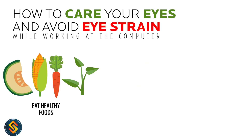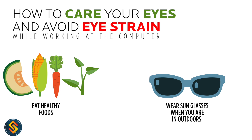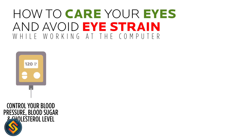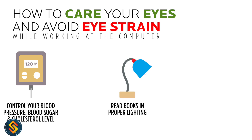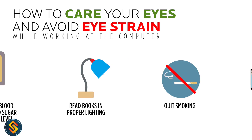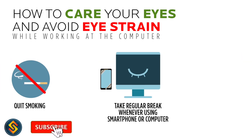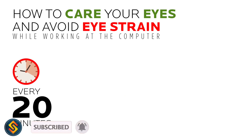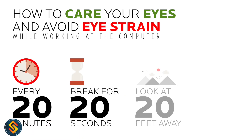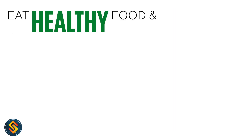Eat healthy foods. Wear sunglasses when you are outdoors. Control your blood pressure, blood sugar, and cholesterol level. Read books in proper lighting. Quit smoking. Take regular breaks whenever using a smartphone or computer: every 20 minutes, break for 20 seconds, look at 20 feet away.